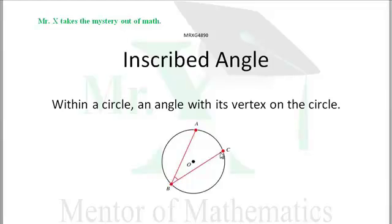Don't confuse it with the central angle. If we had AOC, that would be called a central angle with a vertex at the center of the circle. But this is what we mean by an inscribed angle, angle ABC.